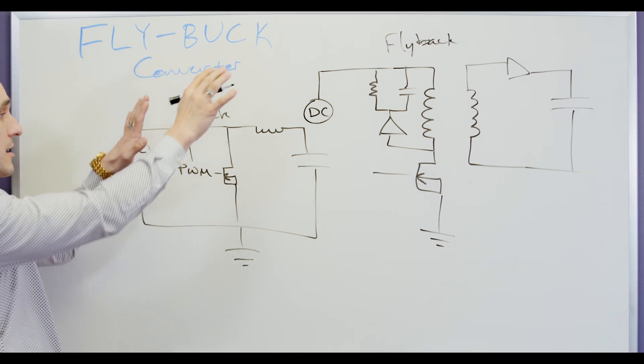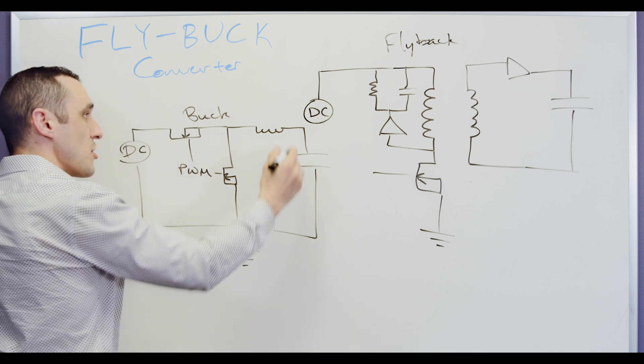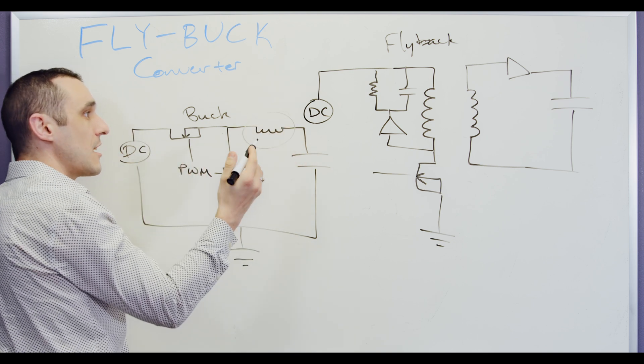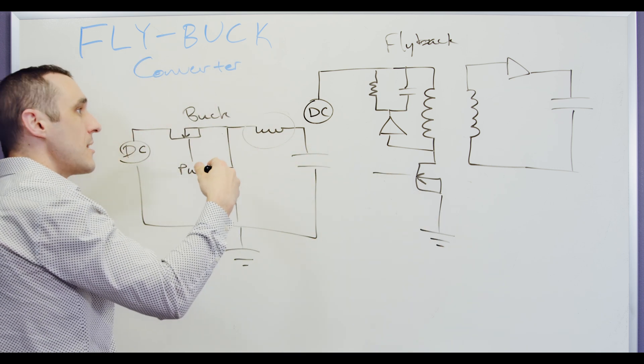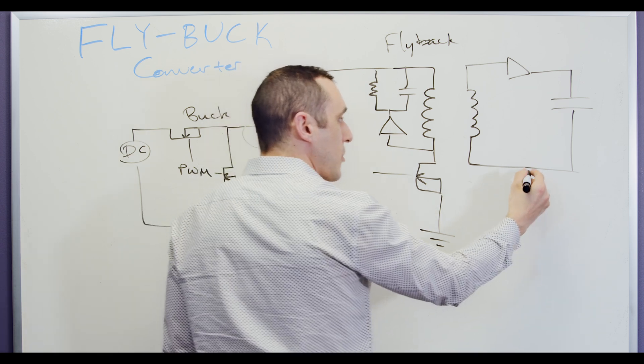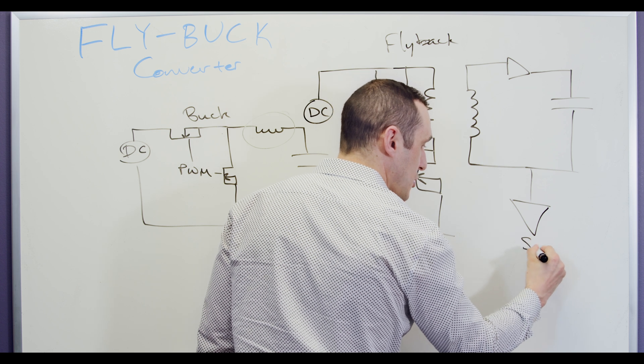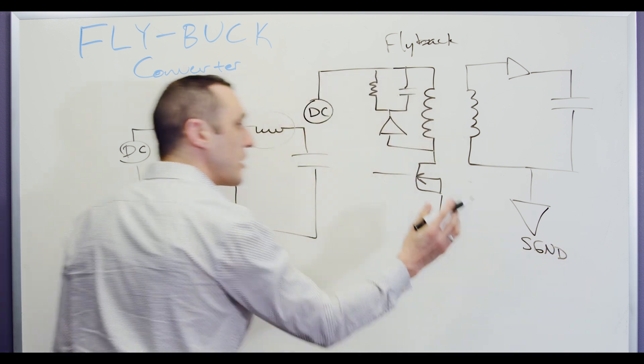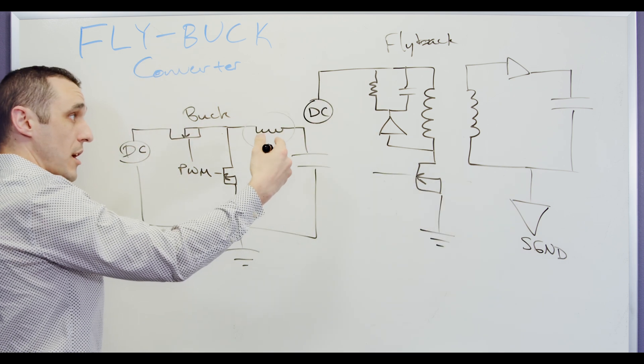So a fly buck converter essentially fuses these two topologies right here at this inductance. So what I mean is we can implement the type of isolated topology that we see here where we could have a separate ground net, let's call this SGND.